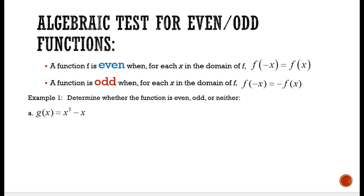There's an algebraic test for even and odd functions. So if you don't have a graph, you can figure this out algebraically. Here's the rule of thumb: if a function is even, then if you take the function and put in a negative x and simplify, it will come out looking like the original f(x). If a function is odd, then if you put a negative value in for x and clean it up algebraically, it's going to come out being the negative version of that same equation.